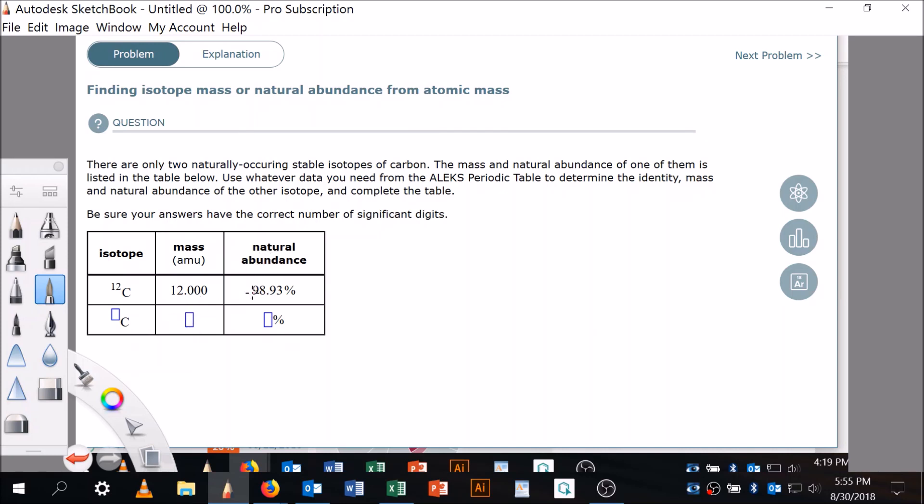The mass of carbon-12 is given, the mass of the other one is here, and the natural abundance of carbon-12 is this one and the natural abundance of the other isotope is here. So it looks like there's a lot to find out, but if you know that there's only two naturally occurring isotopes...